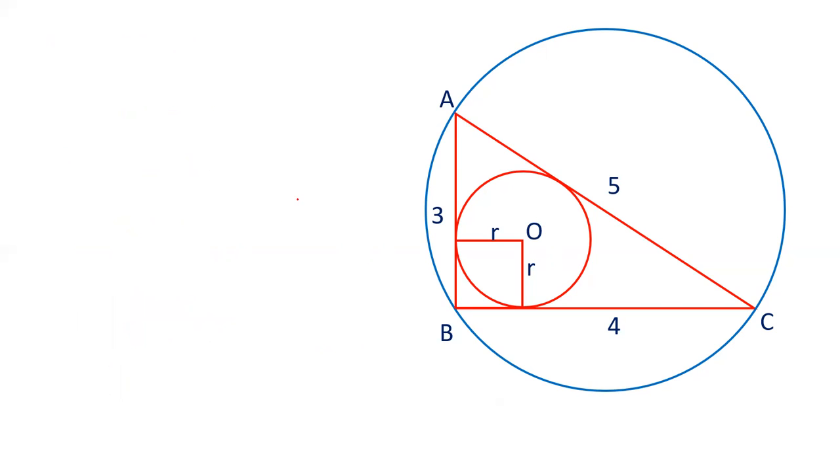Now let's calculate the radius of incircle. This radius is perpendicular to tangent, this radius perpendicular to tangent. Let's say this point is P, this point is Q. We will find out the radius by two different methods.